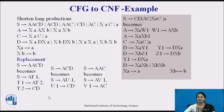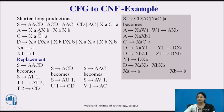One more step: any long productions must be shortened. For example, AACDA is converted as follows — S produces A T1, where T1 = A T2, and T2 = CD. Similarly, ACD is converted using S produces A U1, and AAC produces S A V1. All productions are shortened this way, and thus we have converted the CFG into CNF.